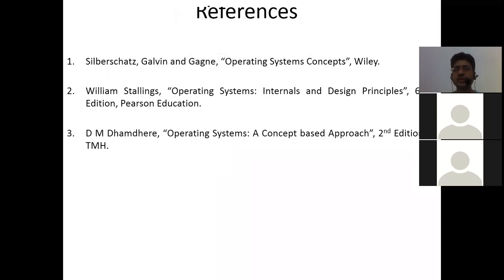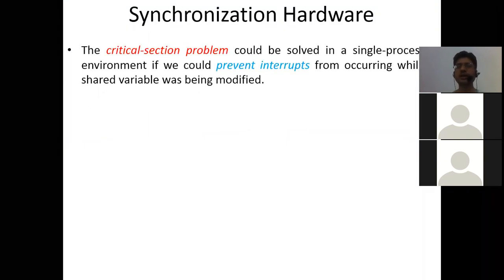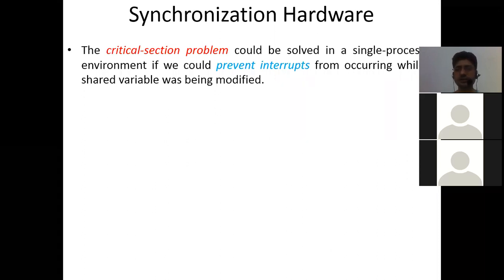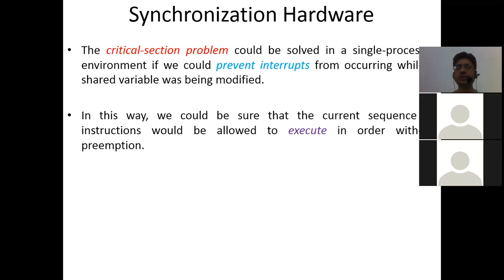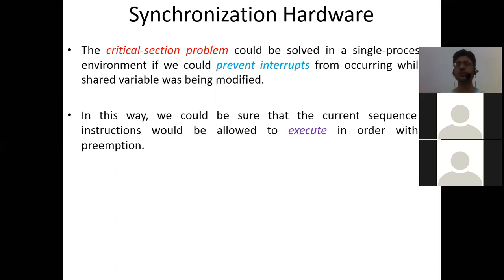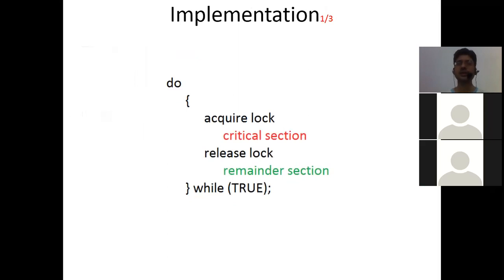Let me revise once more. Synchronization hardware: the basic idea is to stop the interrupt if it interrupts a process executing in its critical section. The critical section problem can be solved in a single processor environment if we prevent interrupts from occurring while a shared variable is being modified. In this way, the current sequence of instructions executes in order without preemption, and no unexpected modifications are made to the shared variable. This is the approach taken by non-preemptive kernels — acquire a lock, do the critical section, then release the lock.